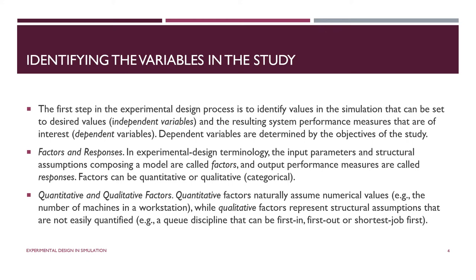Factors can be quantitative or qualitative. Quantitative factors naturally have numeric values, like the number of machines in a workstation or the number of tellers in a bank. Qualitative factors represent structural assumptions and might be categorized — for instance, queue discipline could be LIFO, FIFO, priority, shortest job first, and so on. Sometimes qualitative factors are coded numerically, with values 1, 2, and 3 representing the different queue discipline options.